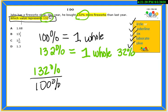We will always use 100% when comparing percentages. Because 100% is the original value and 132% is the increased value. We already know that it is 1 whole and 32 hundredths.